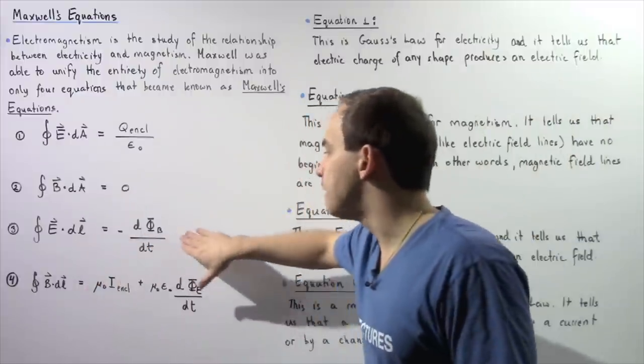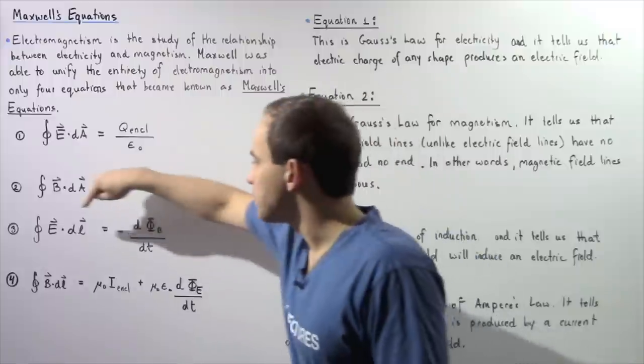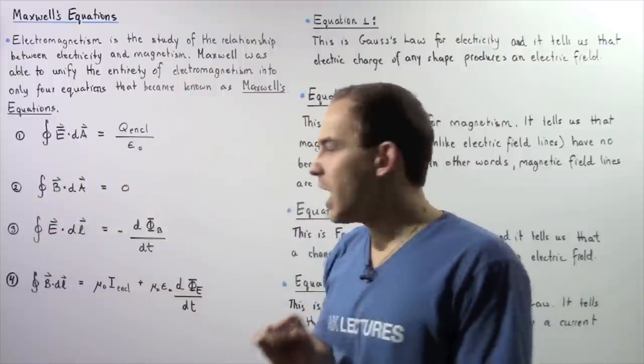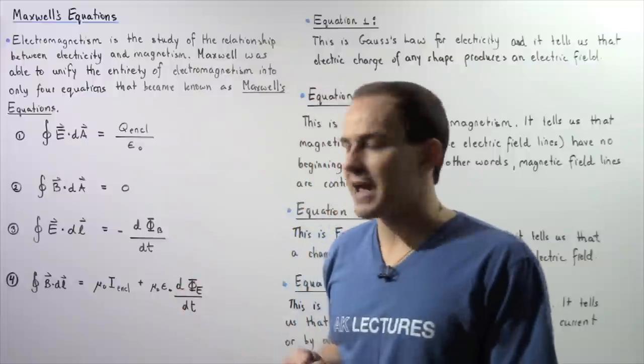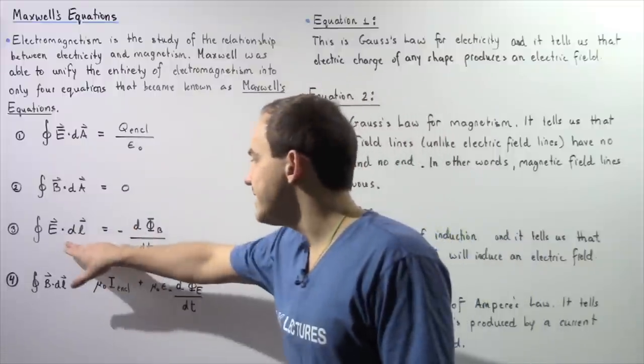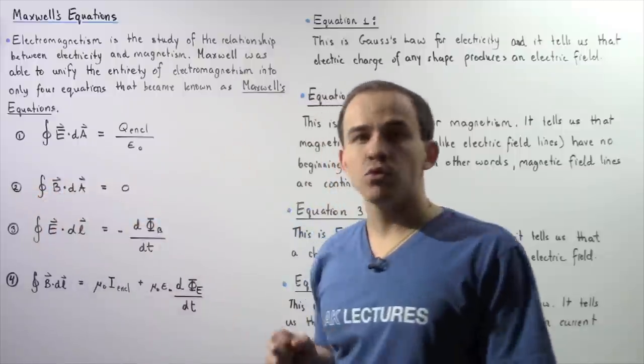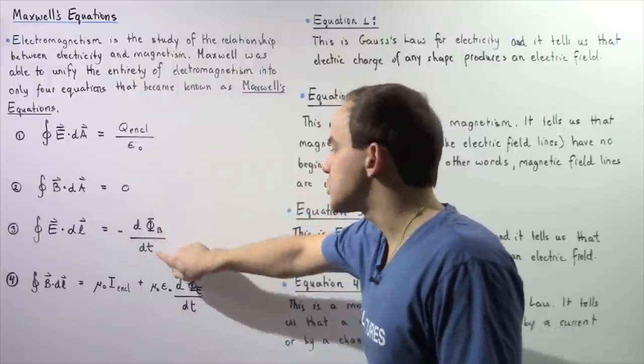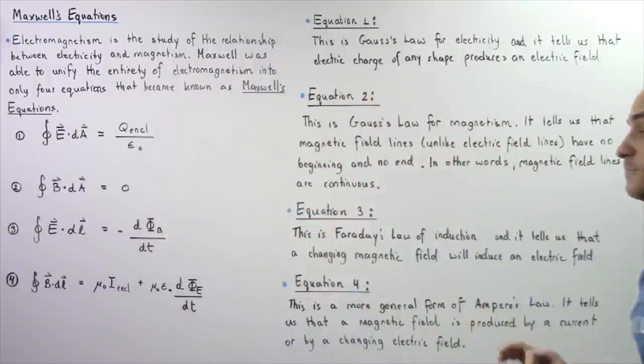described by the following equation. If we take the closed integral of the dot product of the electric field vector and our infinitely small displacement vector dL, that is equal to the negative of the derivative of our magnetic flux with respect to time.